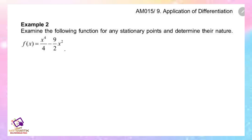Example 2. Examine the following function for any stationary points and determine their nature. f(x) equals x to the power of 4 over 4 minus 9 over 2 times x squared.